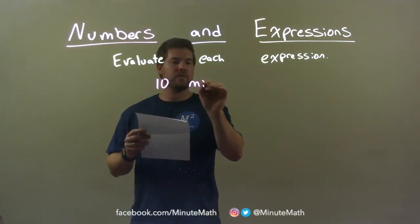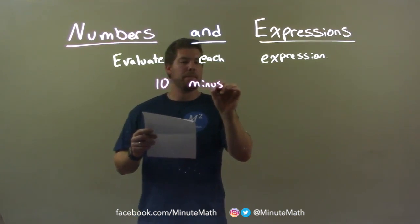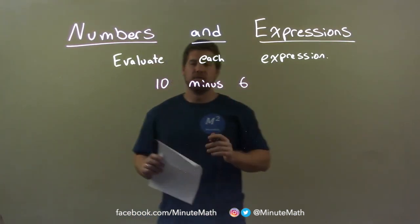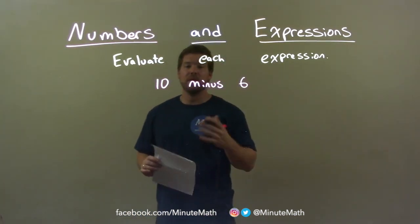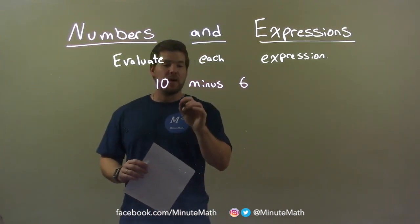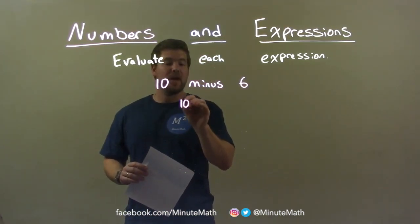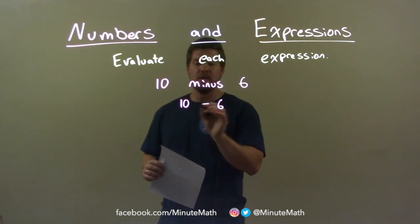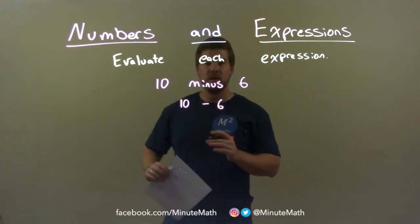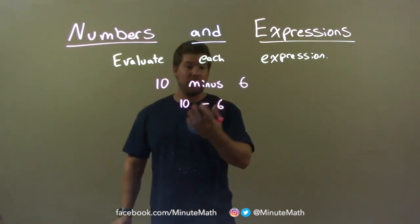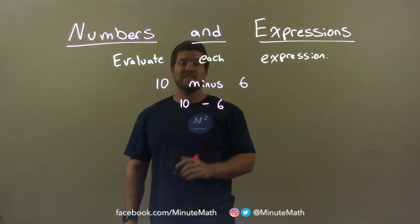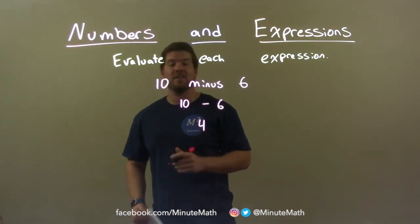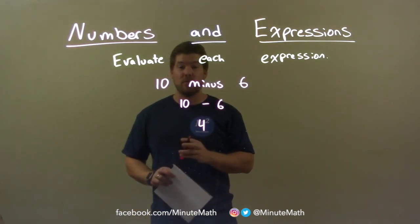10 minus 6. So we're given 10 minus 6. Let me write this as an algebraic expression: 10 minus — subtracting — 6. So 10 subtract 6. Now we evaluate that: 10 minus 6 is just 4. Our final answer here is just 4.